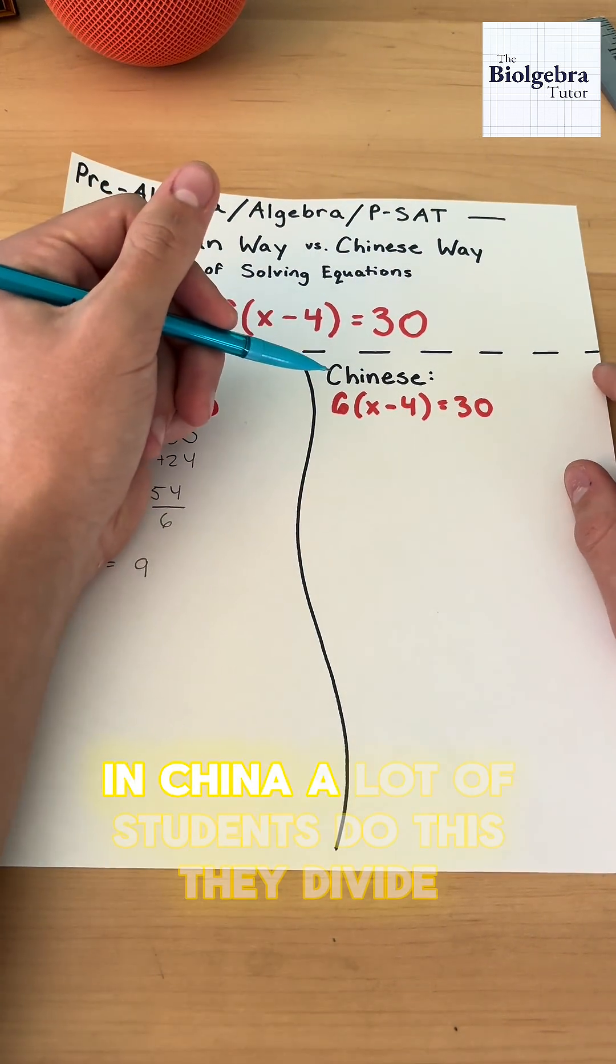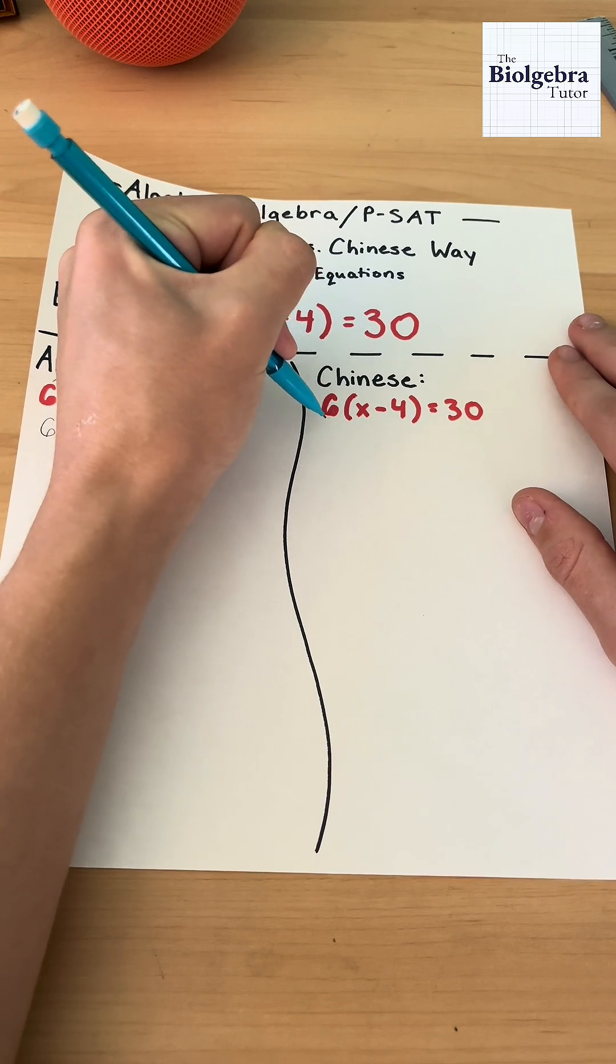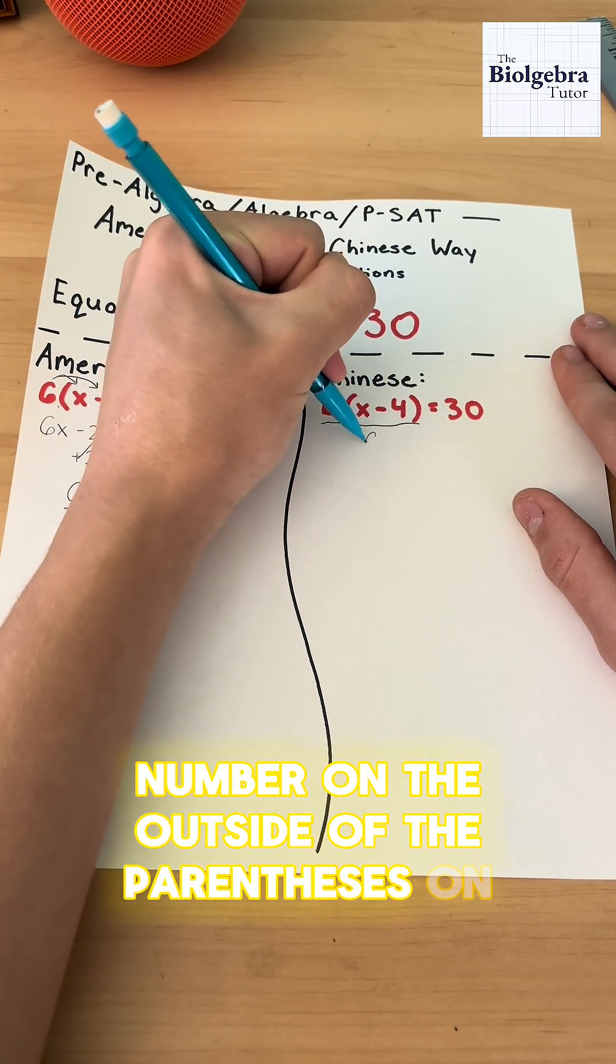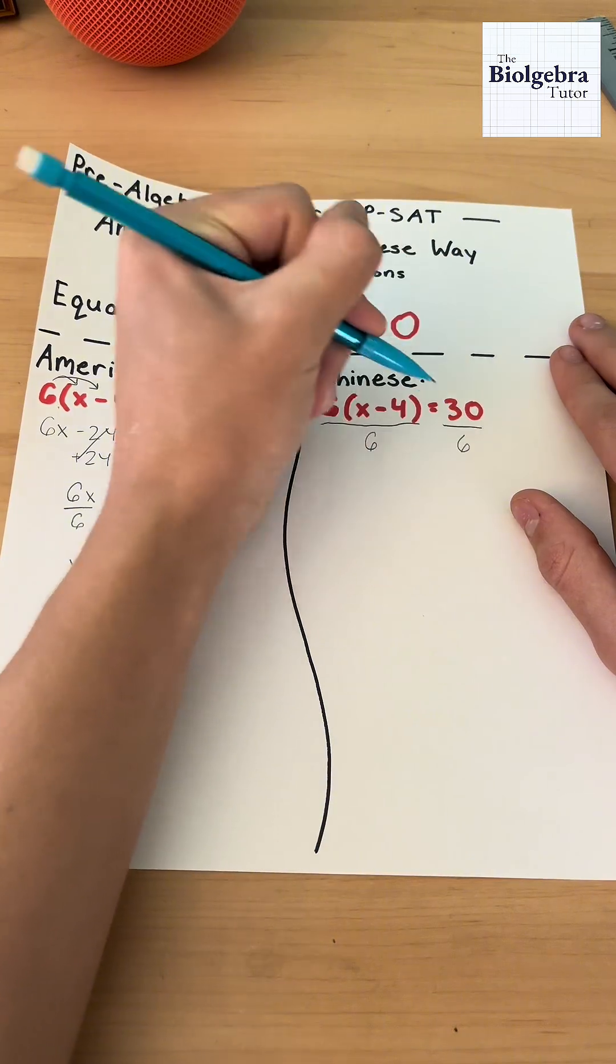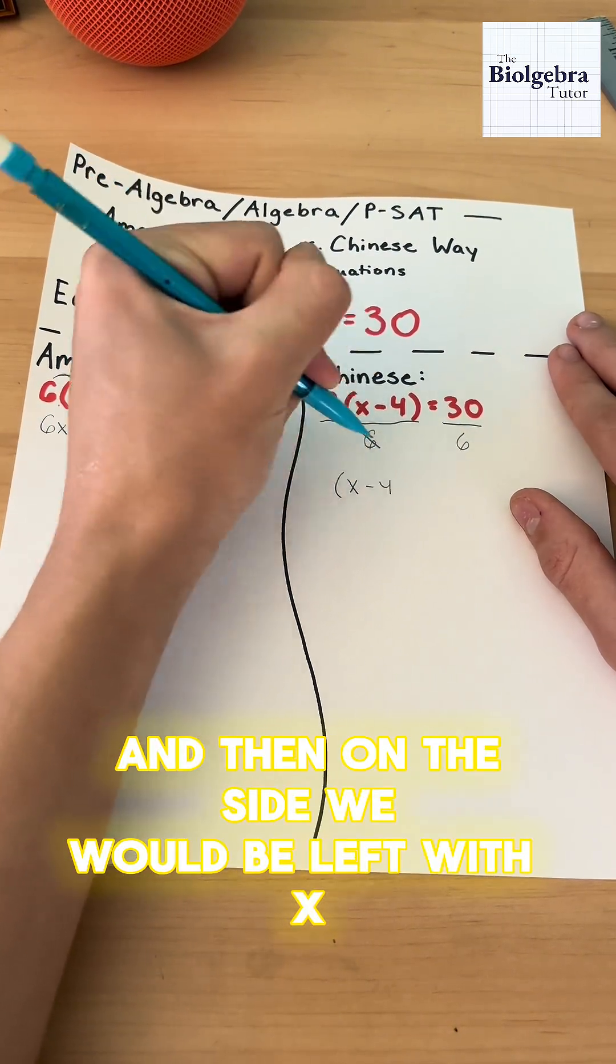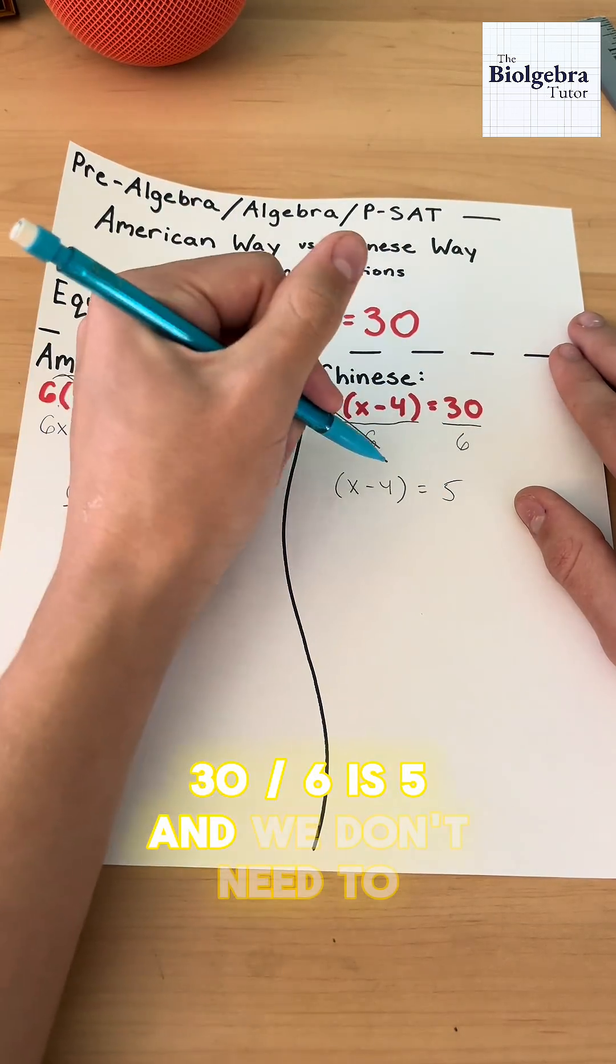In China, a lot of students do this. They divide the number on the outside of the parentheses on both sides. So this 6 would cancel out. And then on this side, we would be left with x minus 4. 30 divided by 6 is 5.